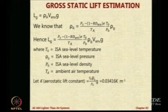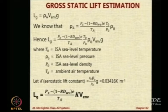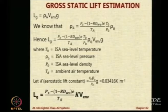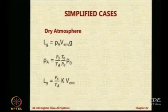K is the aerostatic constant — different from the previous one because now we have g included, so it is 10 times more. You can say the gross lift is Ps minus (1 minus Rd) times W_V into E upon T_a, times K into V_E and V, where K is a constant. In dry atmosphere, gross lift simplifies to Ps by Ta into K into V_E and V — easy to calculate.